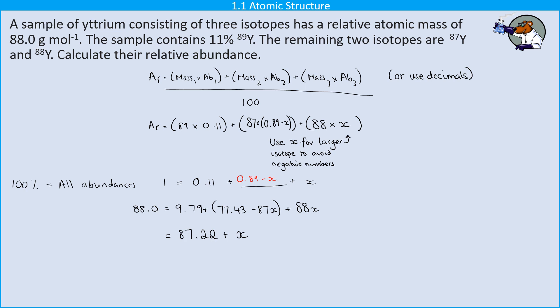So all of that lot simplified on the right hand side comes out at 87.22 plus x. That x has come from the minus 87x and the plus 88x, so you can see now how it's useful to have the heavier isotope being the one that is x, because if we'd done it the other way around we'd still have a very similar expression but it would have a minus x value in it. And then we're just going to take away that 87.22 from both sides and be left with 0.78 is x.